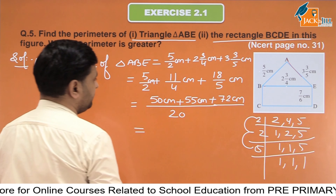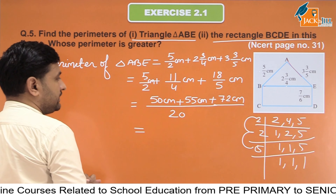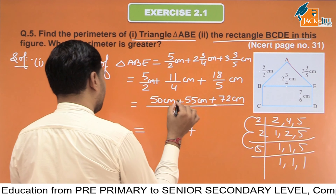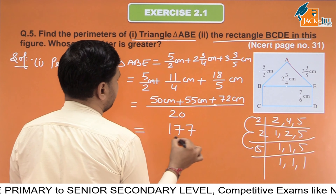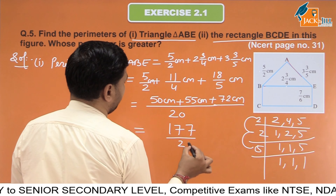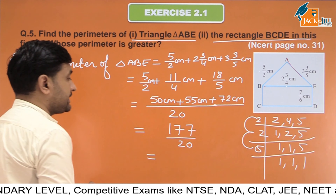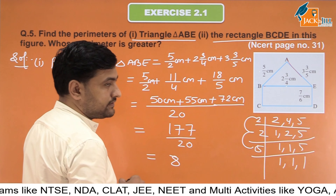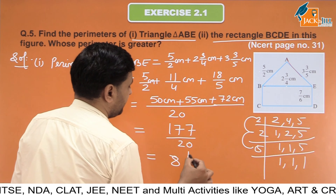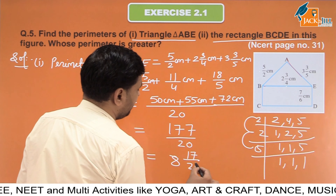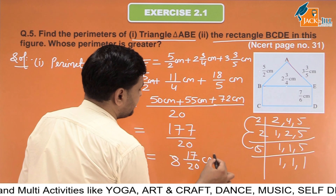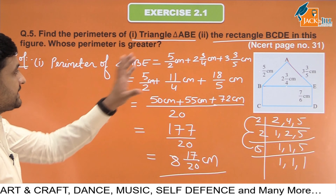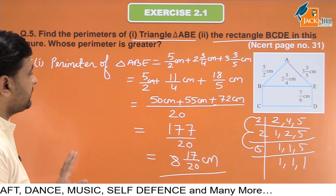Now when we add all three: 5 plus 2 is 7, 7 plus 5 is 12, 12 plus 5 is 17 — giving 177/20. When we divide 177 by 20: 8 times 20 is 160, remainder 17, so the answer is 8 and 17/20 centimeter. This is the perimeter of triangle ABE.